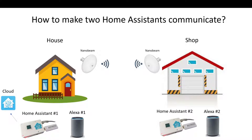Hey everyone. I wanted to do a quick video on how I was able to make two different home assistants communicate and work together. I've just recently switched from SmartThings — I used SmartThings for five years. It was actually a great infrastructure, but I was really unhappy with the Samsung app. It was too slow, took a long time to load, and was not useful from that perspective. Plus, I just like the open source nature of Home Assistant.